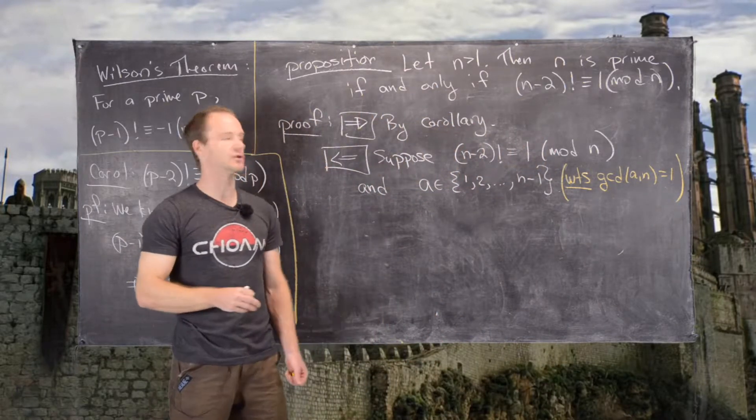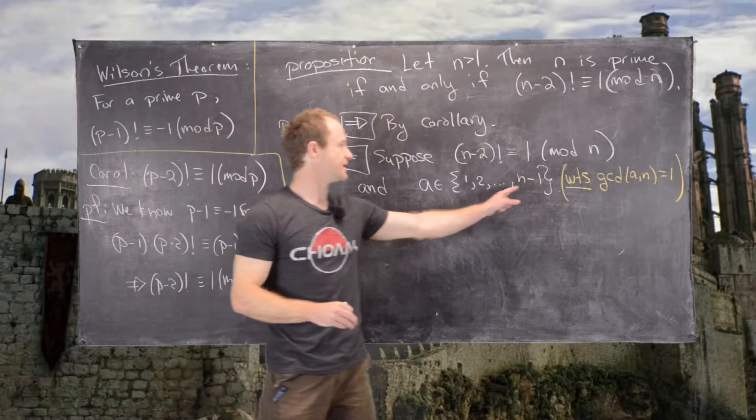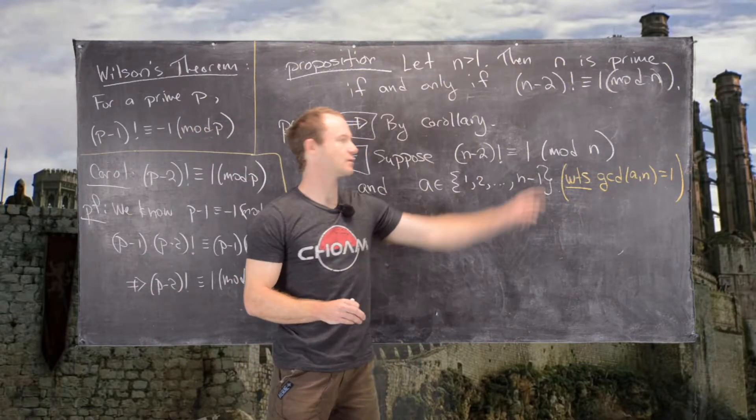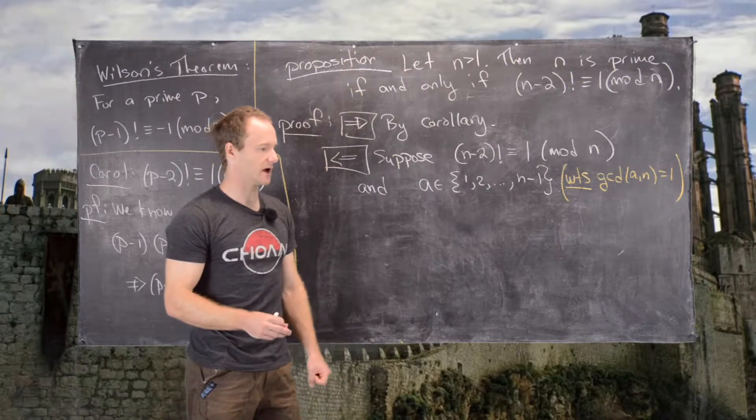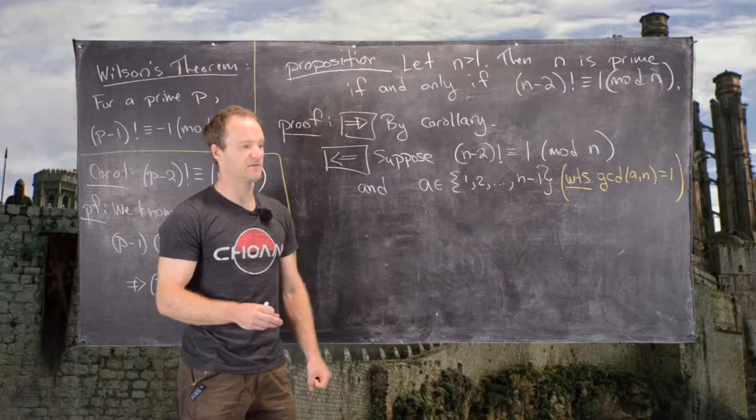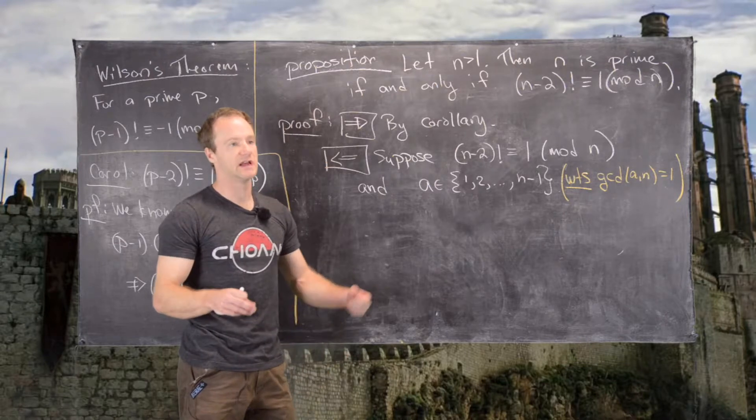I'll just verbally do one part of this. We know that gcd(n-1, n) equals 1. That's a well-known fact that you can check on its own.